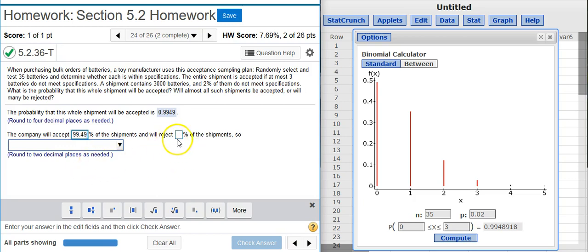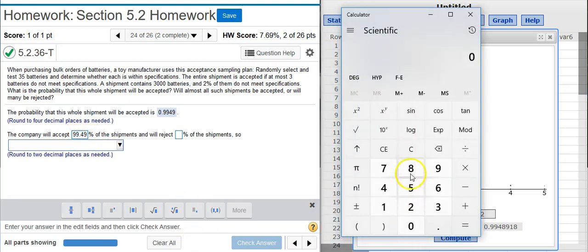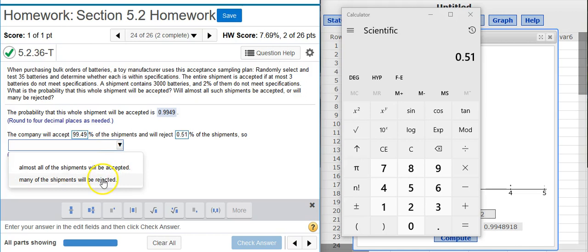And then, the rejection rate is just the complement of the acceptance rate. So, if we subtract that from 100, and I can do that with my handy-dandy calculator here. Just subtract that out from 100. And that gives me my rejection rate, which is awfully low. So, we've got some good stuff going on here. Because, with such a low rejection rate, it's going to be that almost all the shipments are going to be accepted.